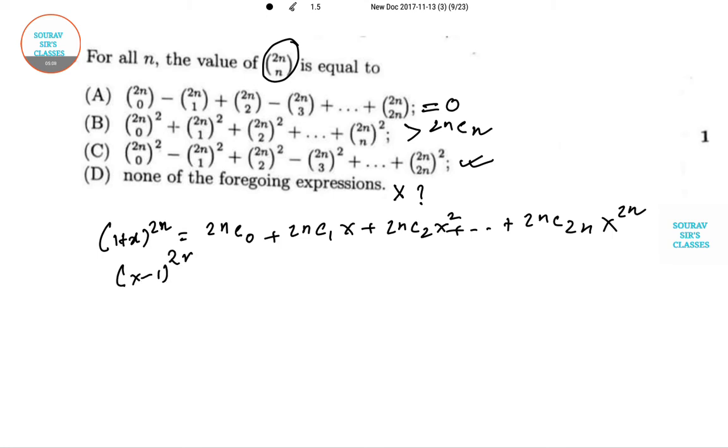So (x-1)^(2n) if we do so, it is 2nC0 x^(2n) minus 2nC1 x^(2n-1) dot dot dot plus or minus 2nC(2n). Now if we just multiply these two, we get a longer expression.